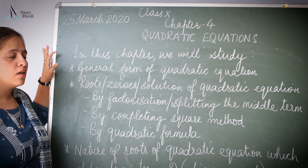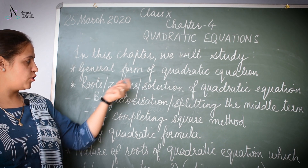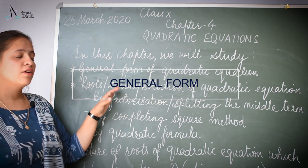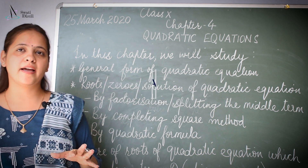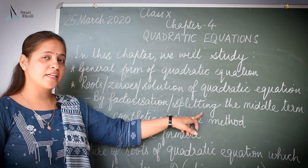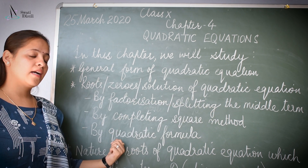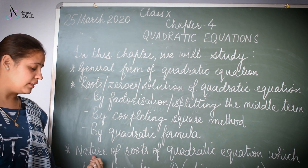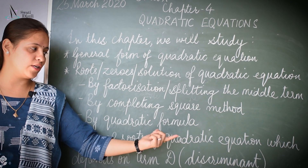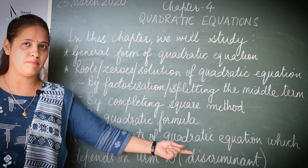In this chapter, we are going to study the general form of the quadratic equation, the roots, zeros, or solution of quadratic equation, which can be found out by three methods: by factorization method which we call splitting the middle term, by completing the square method, and by quadratic formula. The third thing we will discuss is the nature of the roots, which depends on the term D, which we call the discriminant.